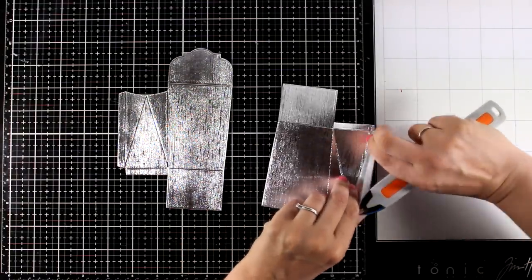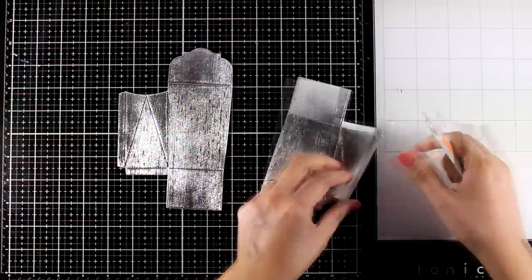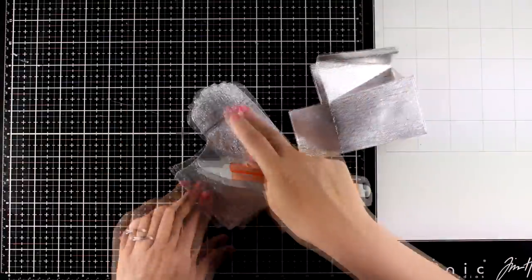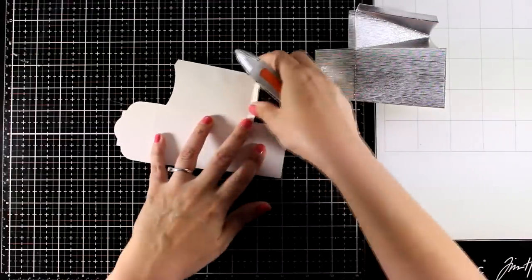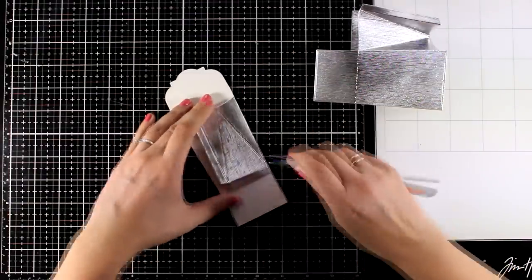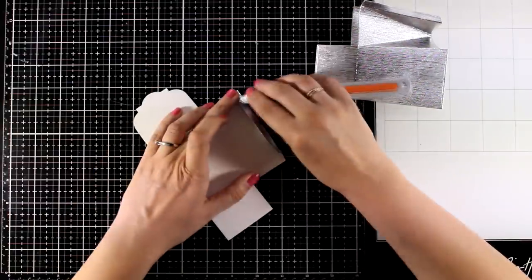And this is the part where you need to decorate the front and the back if you want to decorate anything. Since they are completely flat, they are easier to work with. Once you put together the box, it's always difficult. Not that it isn't possible.